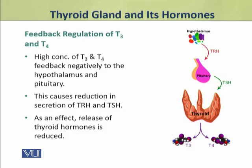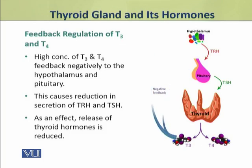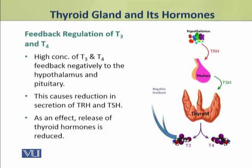The release of T3 and T4, that is thyroid hormones, puts a negative feedback to the hypothalamus and pituitary. As a result, the TRH and TSH production is reduced, which affects the production of thyroid hormones. This way, the negative feedback is mediated by the thyroid hormones.